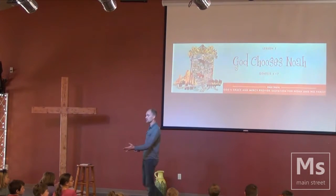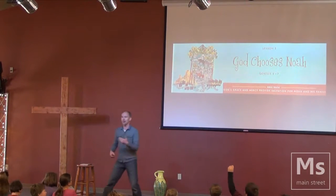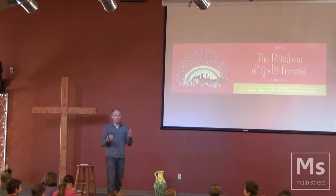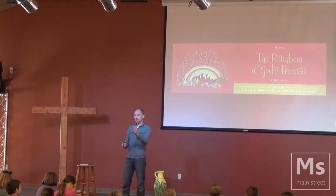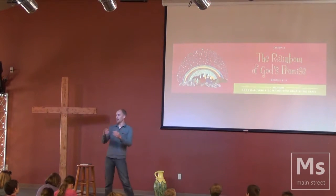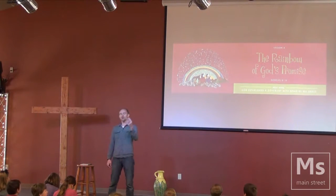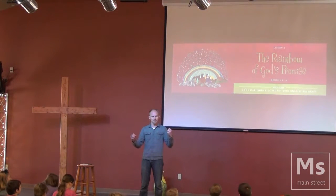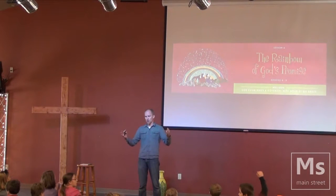Genesis 7 is Noah. Genesis 8 is Noah. And Genesis 9 is Noah. So chapters 6, 7, 8, and 9 — that's four chapters — have to do with a guy named Noah.